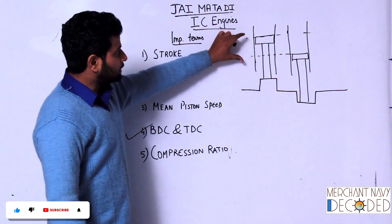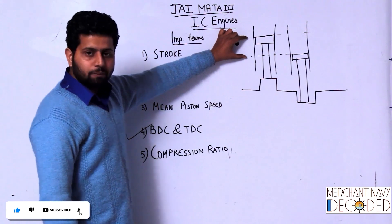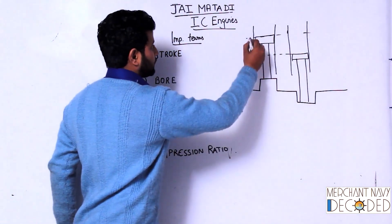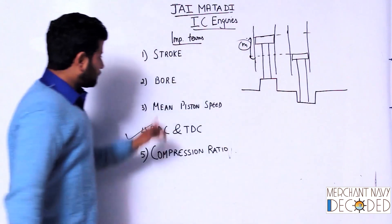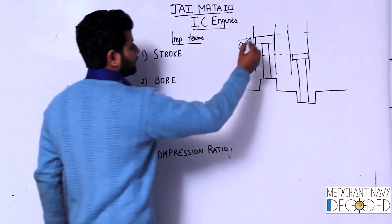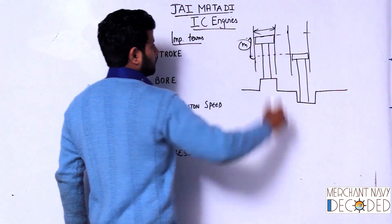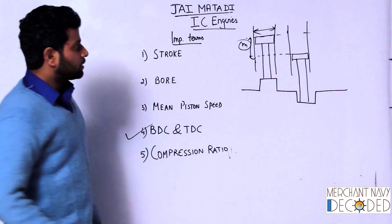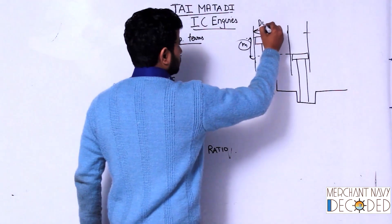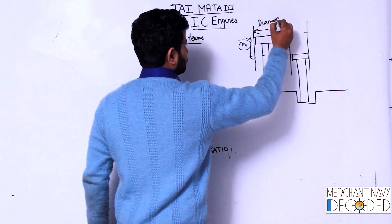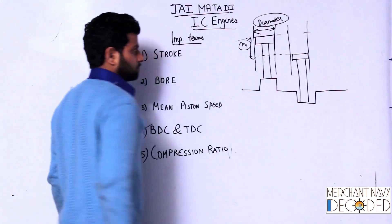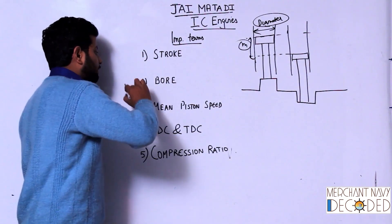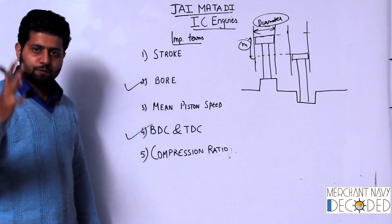Stroke is the distance traveled by the piston between BDC and TDC — so this is the stroke length, which is in meters. What is the bore? Bore is the diameter of the liner. This is again important when we calculate the power of the engine.